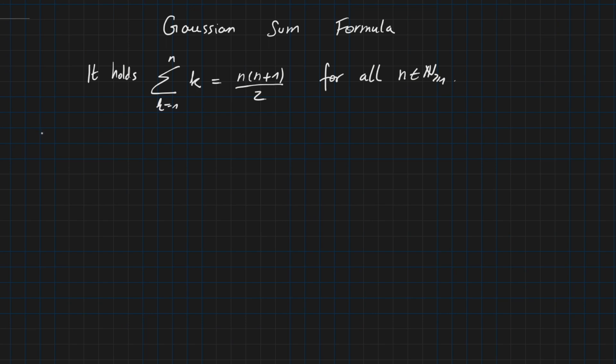And for this we are first looking into the base case. So here n equals 1 and we are checking whether the statement is true. So for n equals 1 we have the sum from 1 to 1 of k equals 1 times 1 plus 1 over 2, and this equals 1.